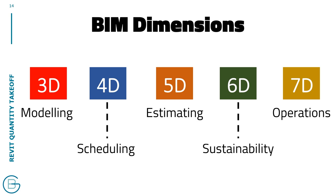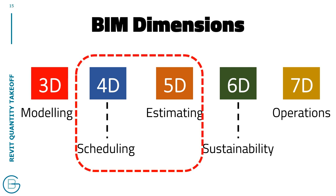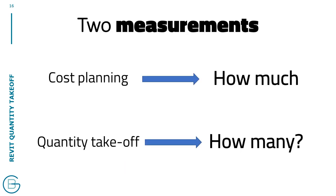These are the basic dimensions of BIM. There seems to be two new dimensions every week when I check, so there's probably a few I'm missing. I'm really focusing on 4D and 5D — the combination of time, quantification, cost, and estimation — more so 5D. We're really focusing on cost planning enabled by quantity takeoff: how much is it going to cost and how many things are generating this cost? I'll be focusing mostly on quantity takeoff.